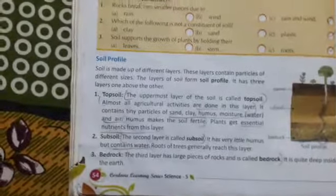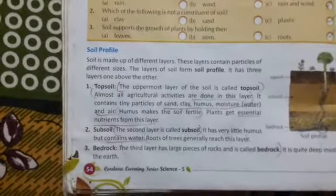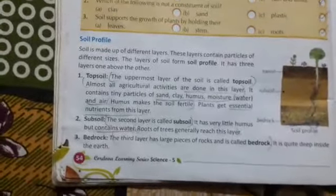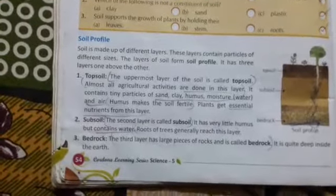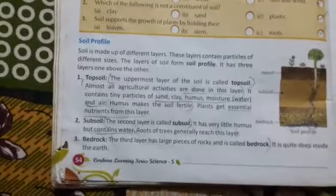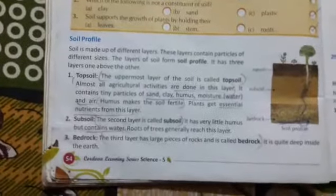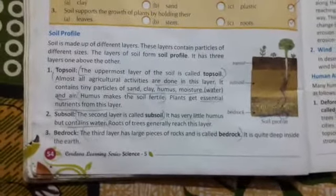The second layer is called the subsoil. It has very little humus but contains water, and roots of trees generally reach this layer. Bedrock is the third layer and it has large pieces of rocks. It is quite deep inside the earth.